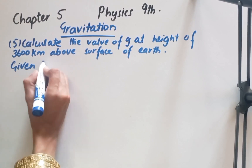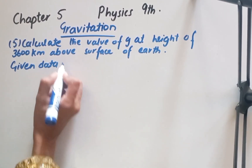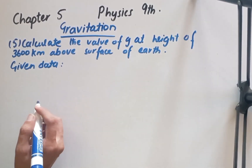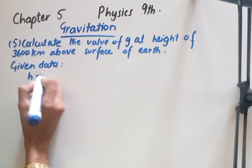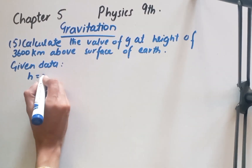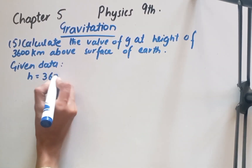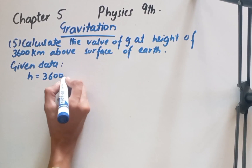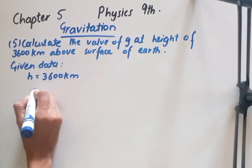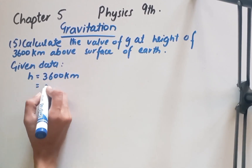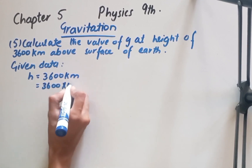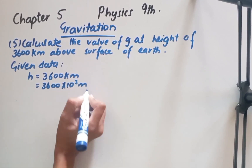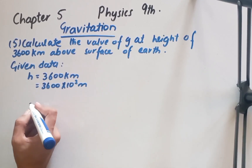The statement for numerical number 5 is: calculate the value of g at the height of 3600 km above the surface of the earth. The given value is height h = 3600 km, which I will convert to meters: 3600 × 10³ meters.